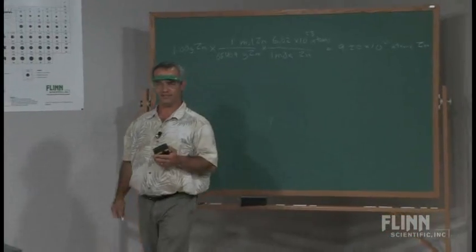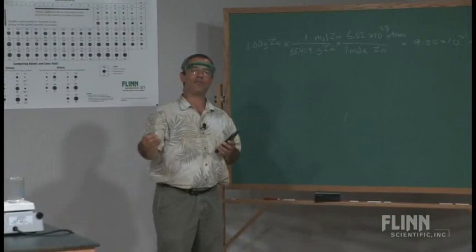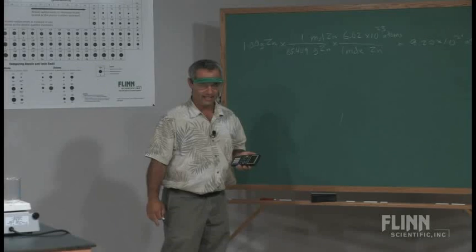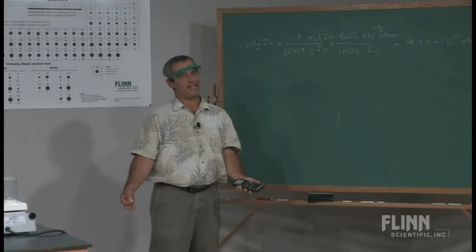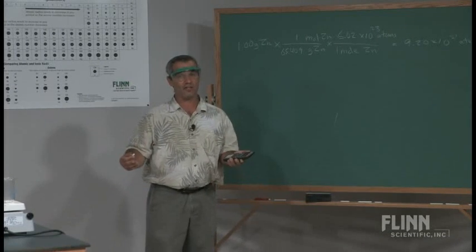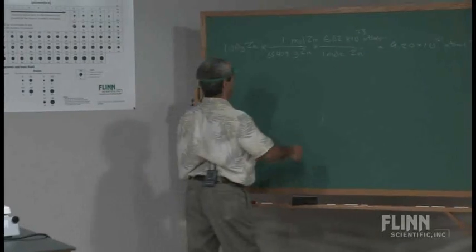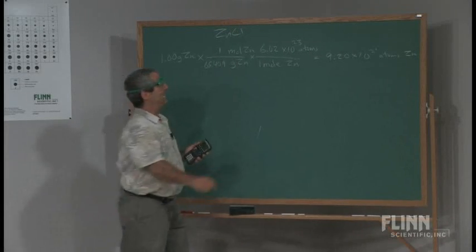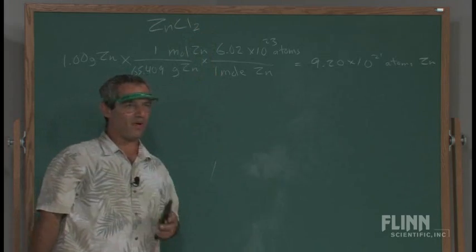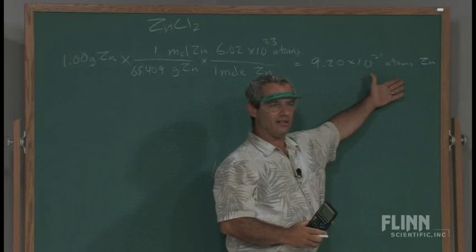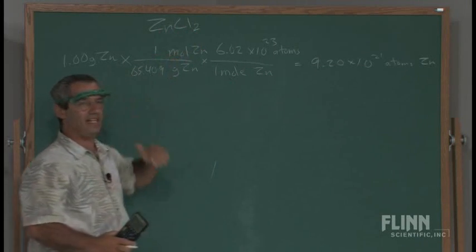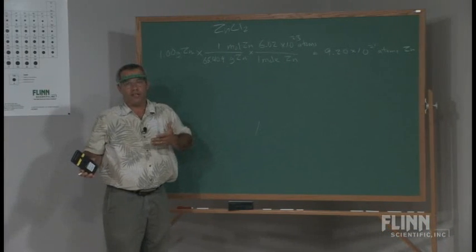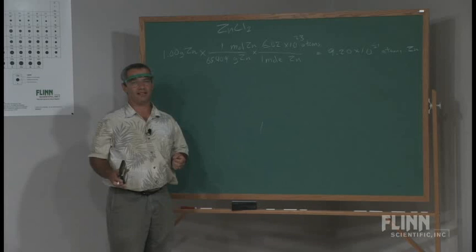Next question: how many atoms of chlorine reacted with it if the product being formed is zinc chloride? I haven't taught them stoichiometry at this point, or balanced equations, but they have learned about balancing charges within a compound. They know that zinc chloride is not just ZnCl, it's ZnCl2. They wrestle with this: I've got that many atoms of zinc, it's forming a compound ZnCl2, so how many atoms of chlorine would come on board inside the beaker to combine with that zinc?